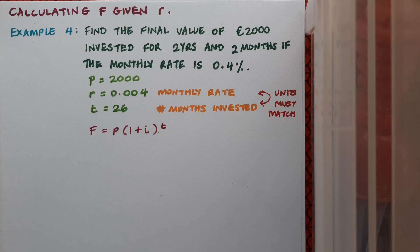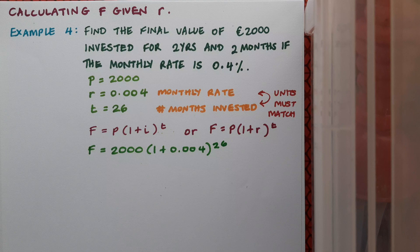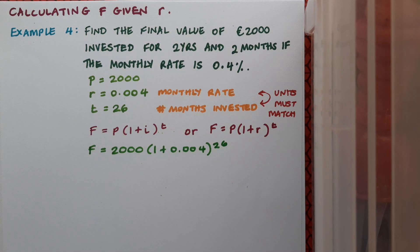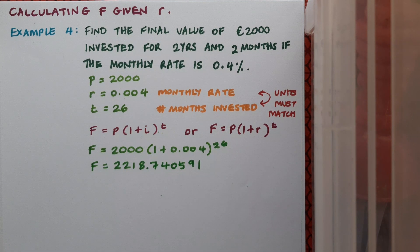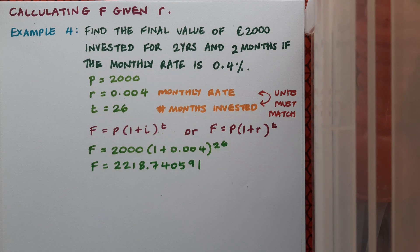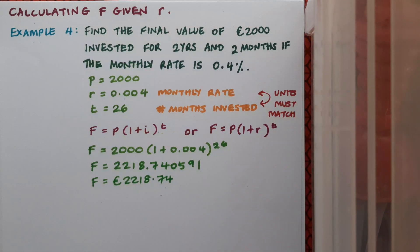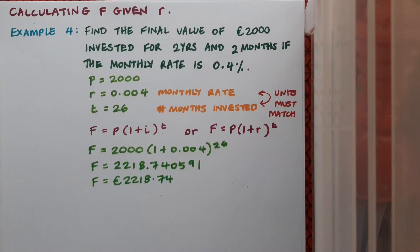The formula in the log tables is F equals P bracket 1 plus i to the power of t. This time I'm using a monthly rate so I'll be putting an r in this place instead. And when I fill my formula in it looks like this. So off I go to the calculator and again type it in exactly as you see it. Getting a load of decimal places there. I wasn't told to round off in the question but it is money that I'm talking about so it makes sense again to round it off to two decimal places at the end of the question. My final answer there is €2218.74.